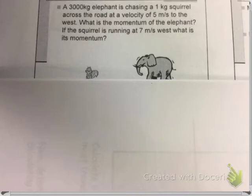So we have our first thing we want to do is list out all of our variables. So what variables do we have? Well, we know that the squirrel has a mass of 1 kilogram. It's a very small squirrel.